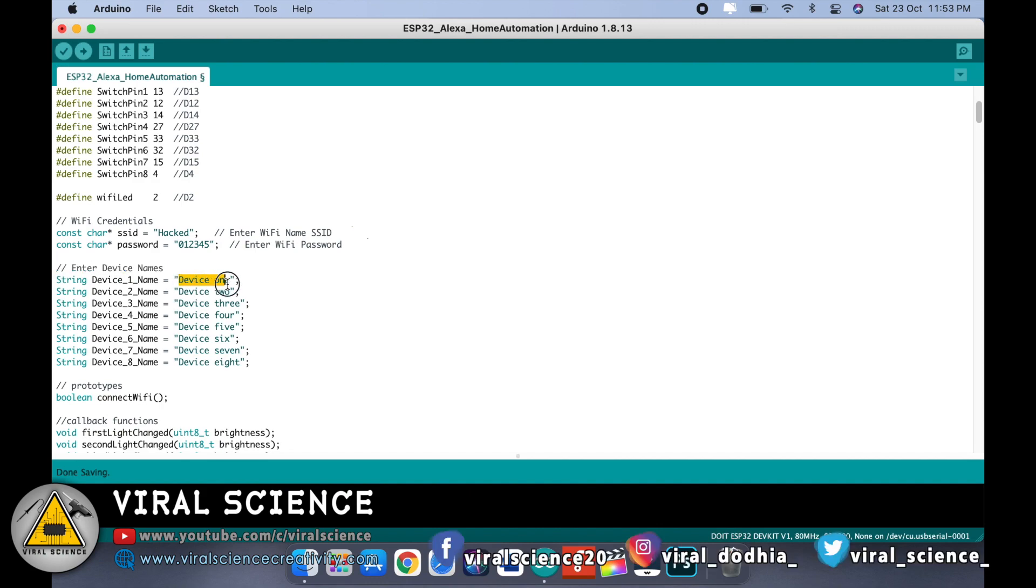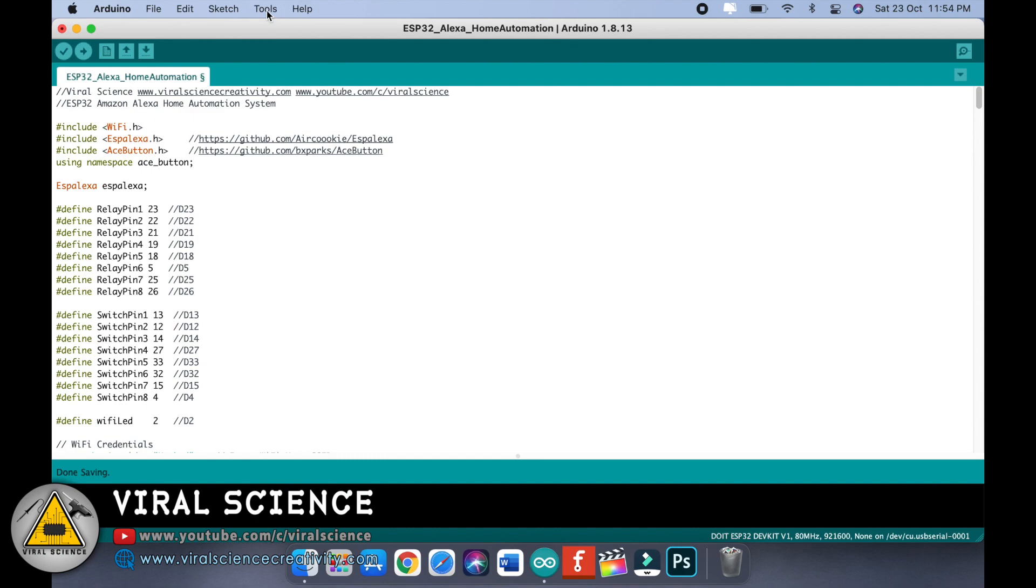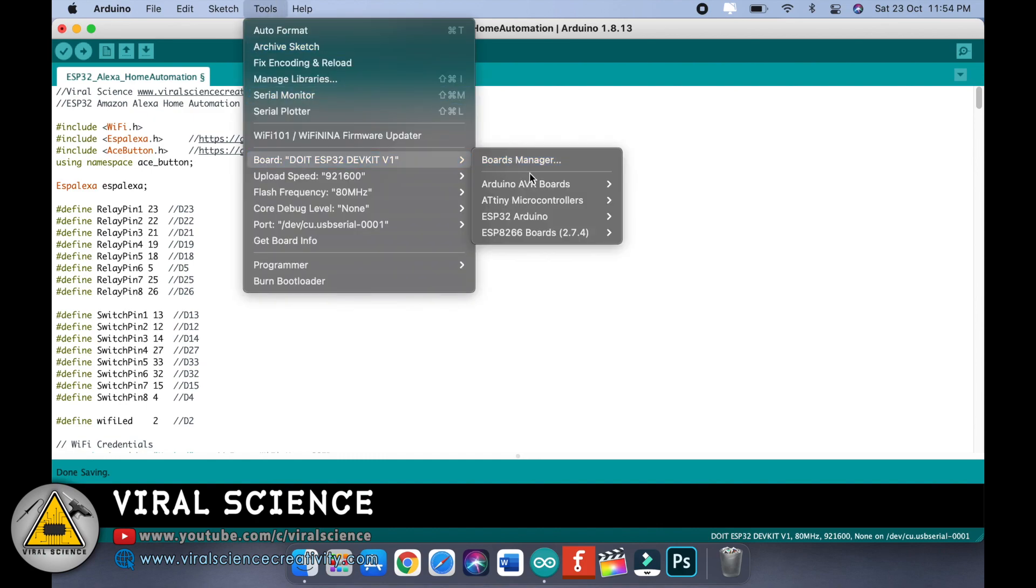Now here we will add the device name. I have added device 1, device 2, device 3. You can even add other names like room light, studio light, bulb, smart bulb, fan, anything you want. To control this we'll call out these names so enter these names accordingly. I'll set it to default which I kept before: device one, two, three, four. Now select the board, that is DO IT ESP32 development kit.